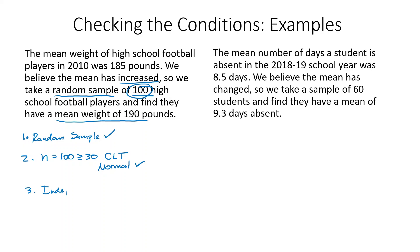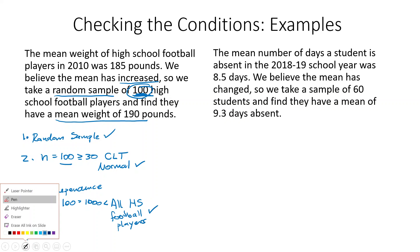Option three: independence. 10 times our sample size of 100 is 1000, and we want that to be less than our population. We take the 100 from the sample and change it to 'all' — so this is all high school football players. I have a feeling there are probably more than a thousand high school football players in the country, so we're good to go there.